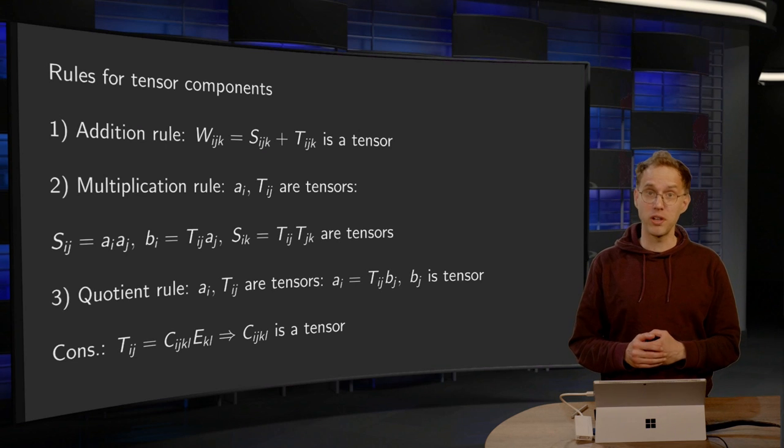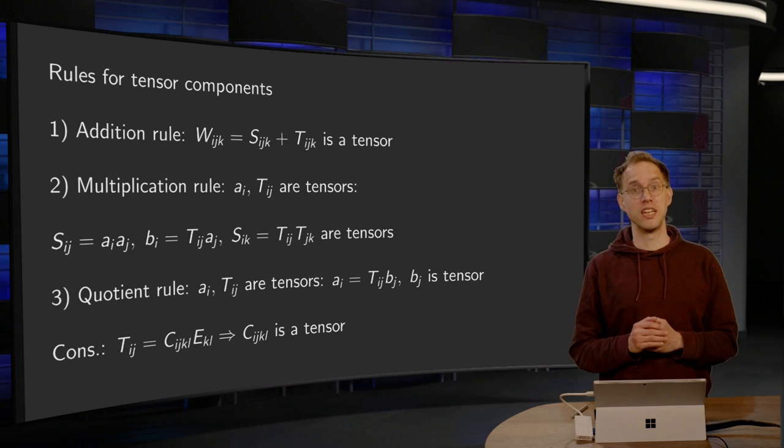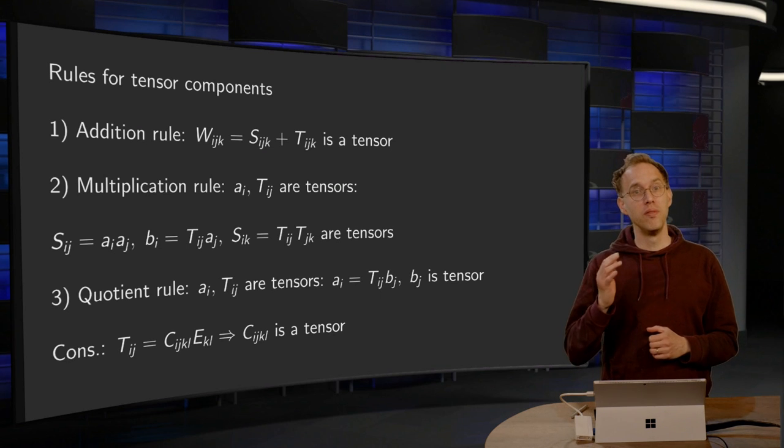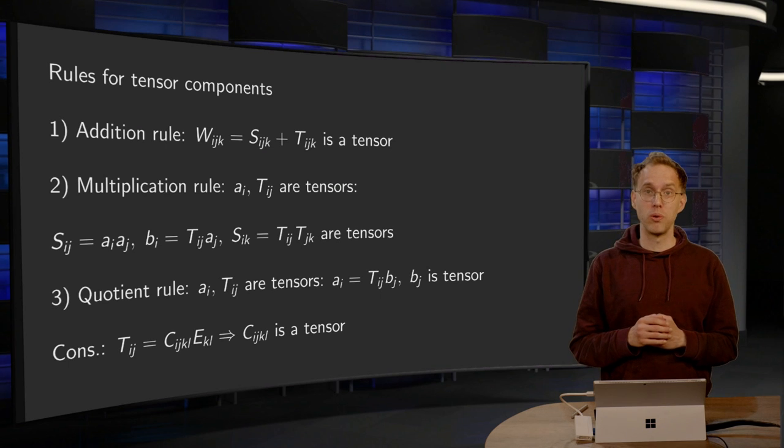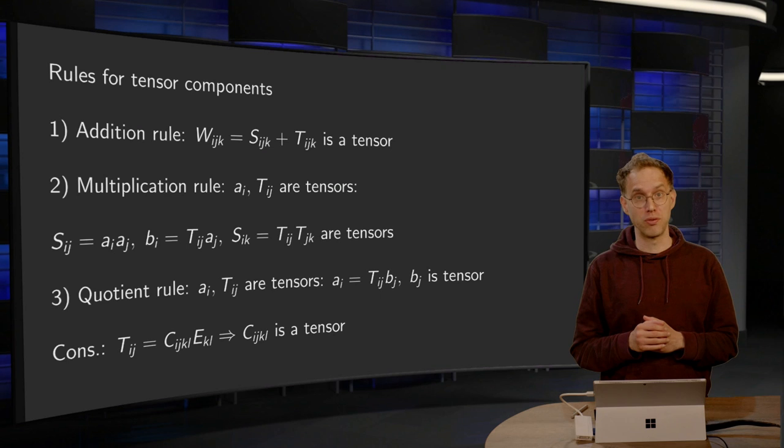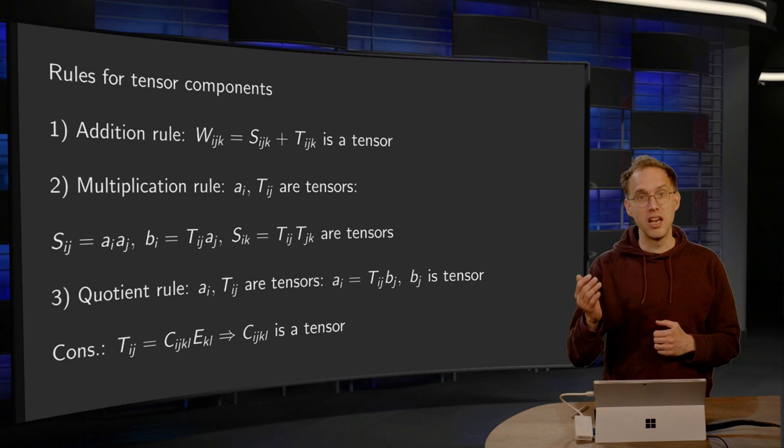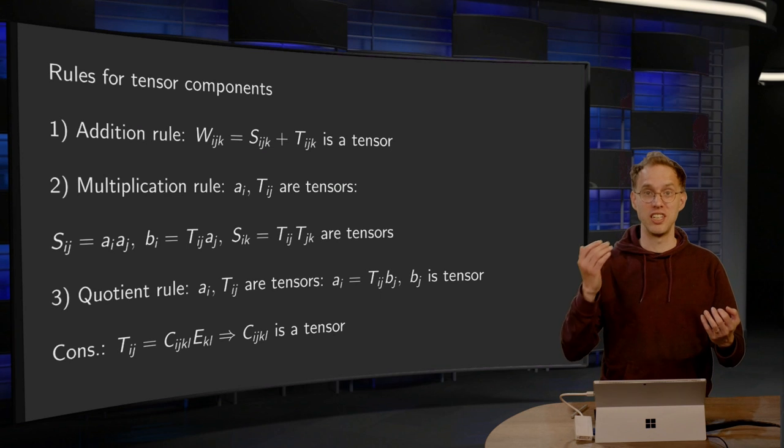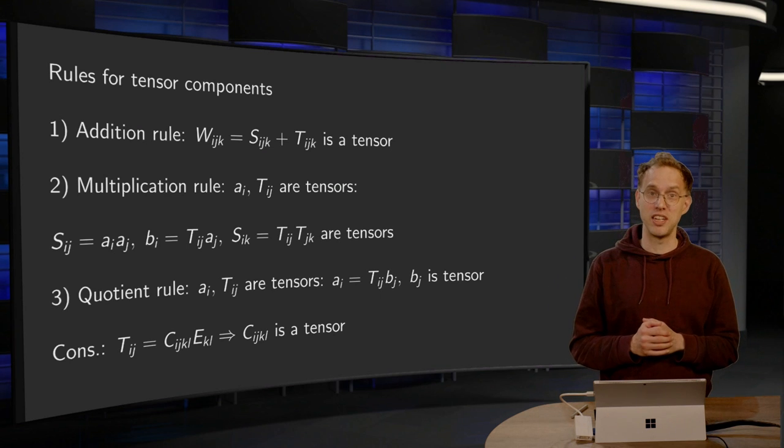The sum and the product of two tensors is also a tensor, and we can show this directly from the definition. We also have the so-called quotient rule, although we cannot divide tensors of course. This last rule allows us, for example, to see that stresses and strains are related via a tensor.